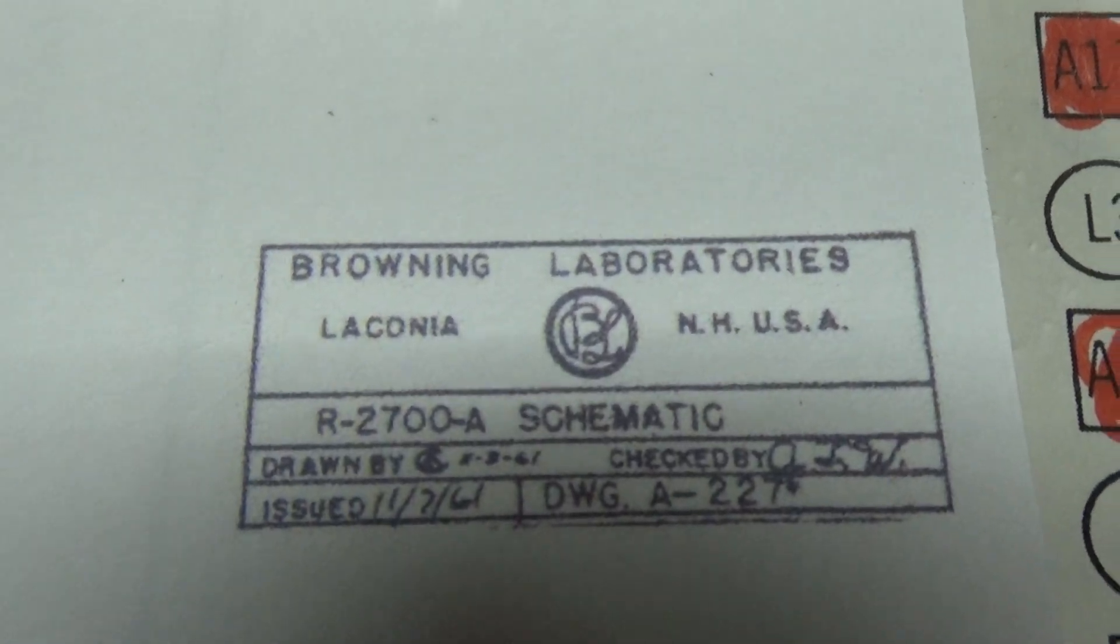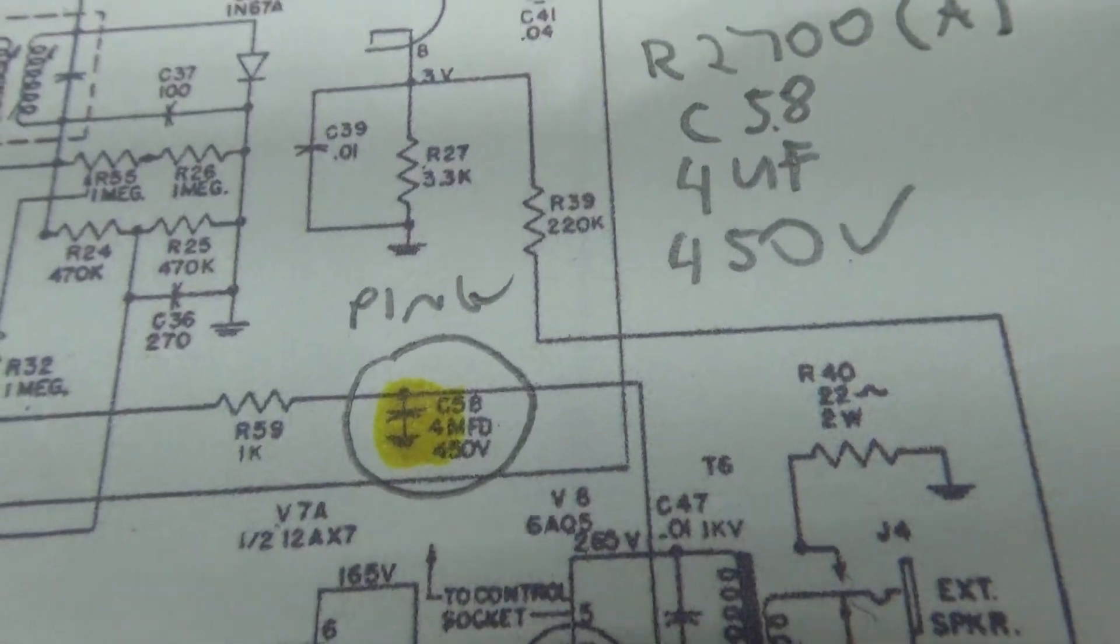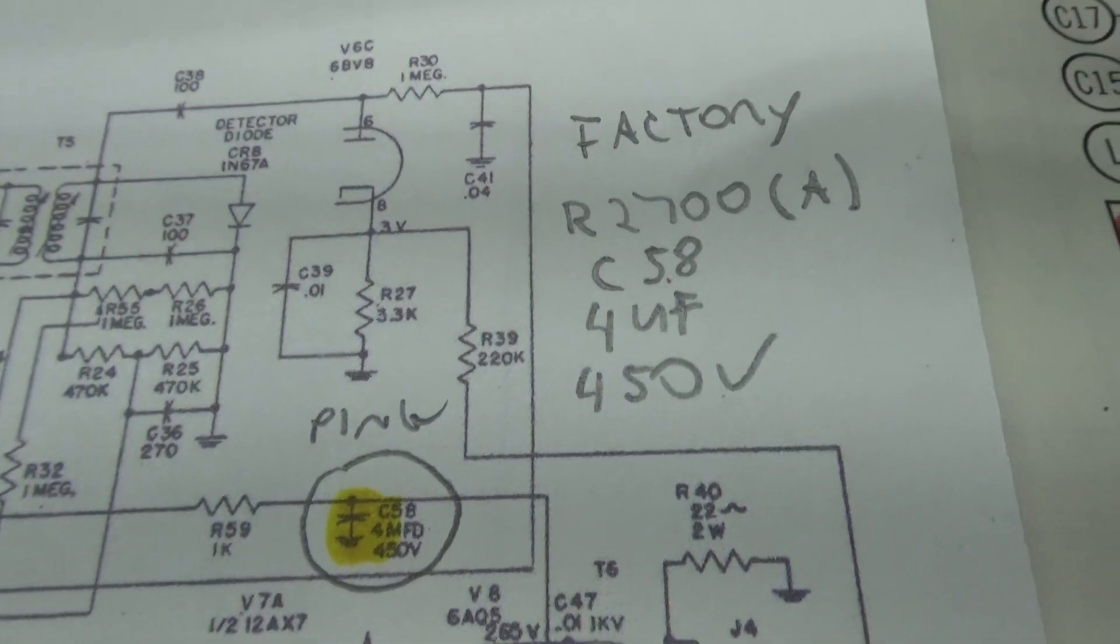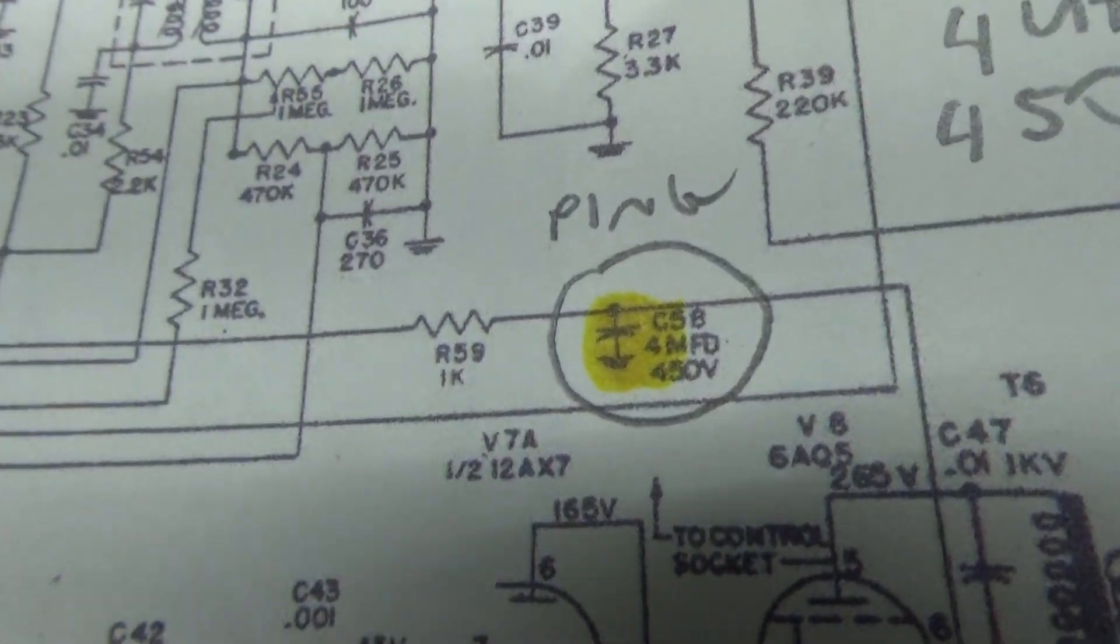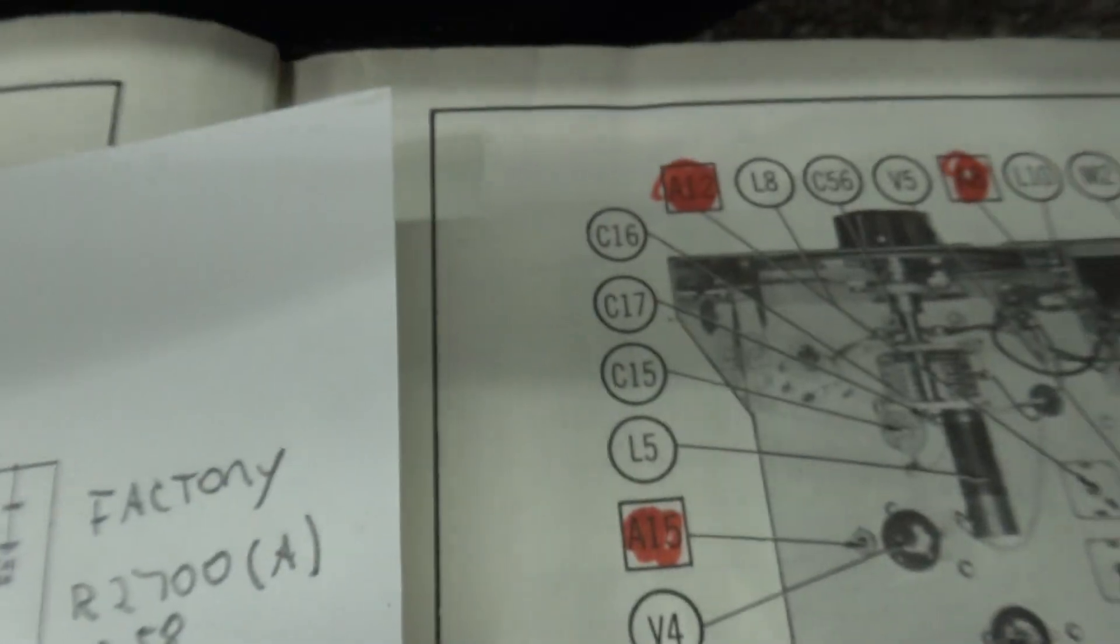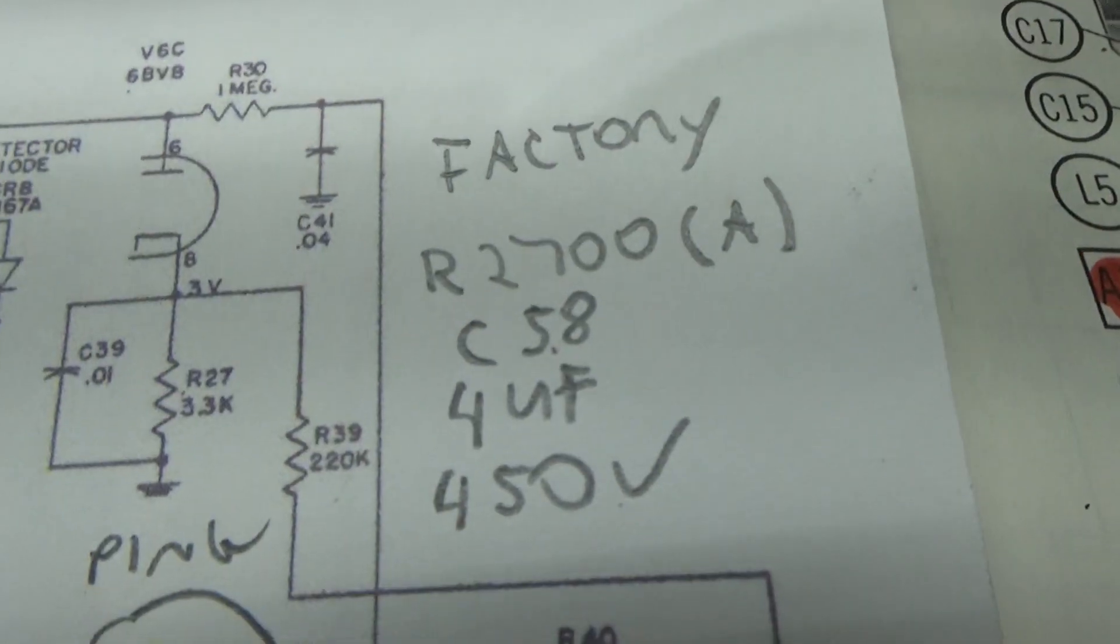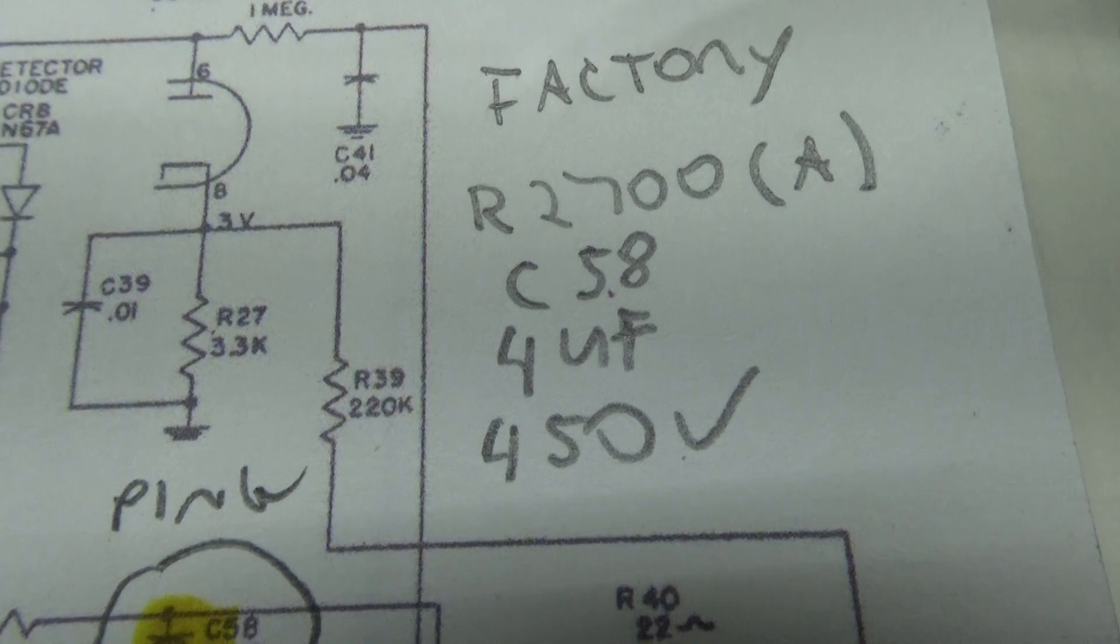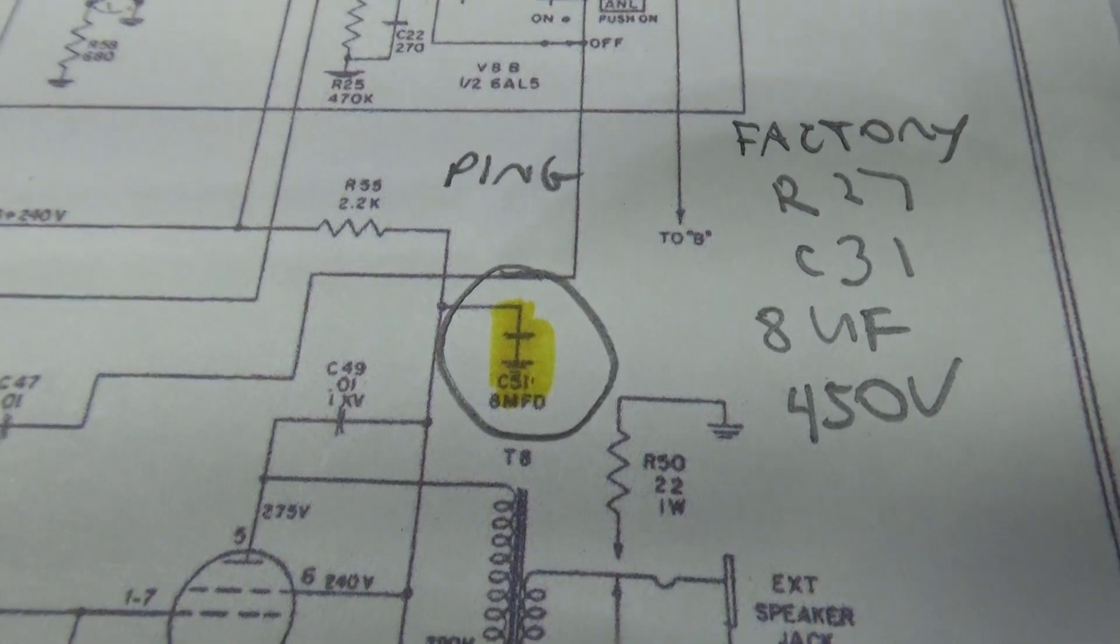This is a Browning schematic of the R2700A. The R2700A is pretty much exactly the same as far as the ping in this area, so you can use this reference for either the R2700 or the R2700A. The pin cap is labeled C58, and it is a 4 microfarad, which won't give you any ping at all. From the factory schematic, R2700A or R2700, it is labeled C58. And on the R2700 schematic it is C31.